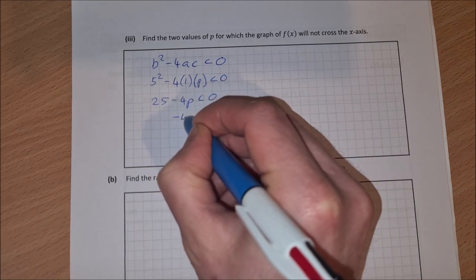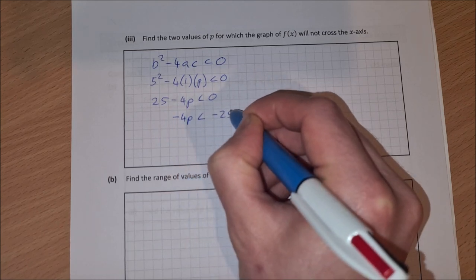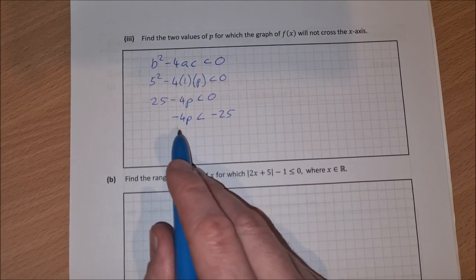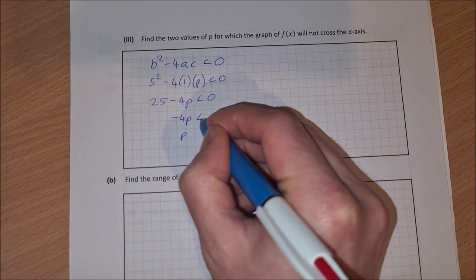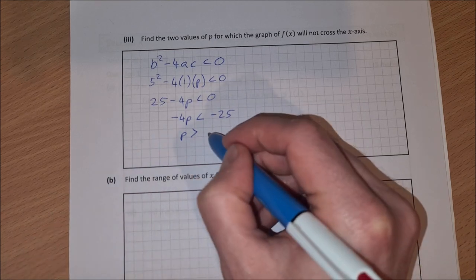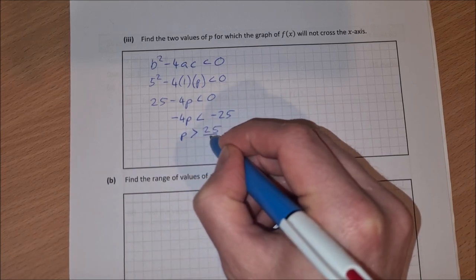Take 25 from both sides to get 4p is less than minus 25. And then divide across by minus 4. That'll give p. Change the sign because we're dividing by a minus, so p is greater than 25 over 4.